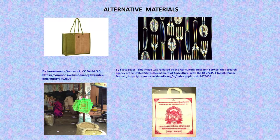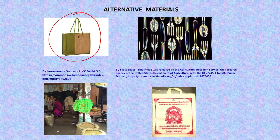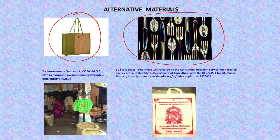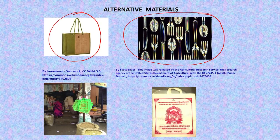Before banning these daily-use plastic items, we need to find alternative materials; otherwise the implementation of the ban will not be effective. There are many alternative materials available. One example shown here is a carry bag made of jute, which is a biodegradable material. Cutlery such as spoons, forks, and knives can also be made from biodegradable materials instead of plastic.